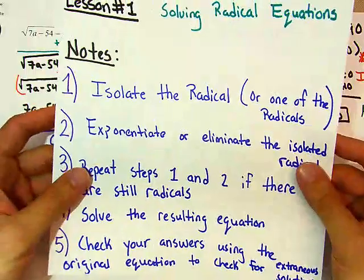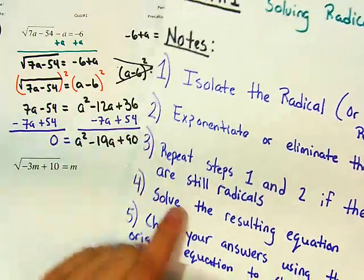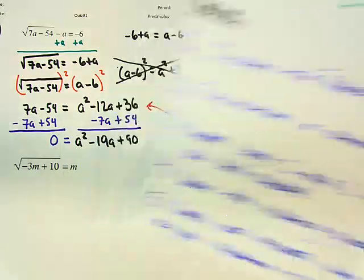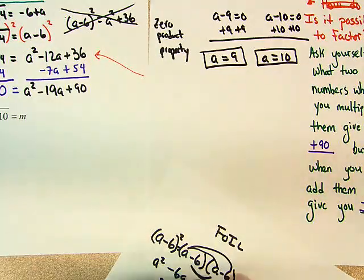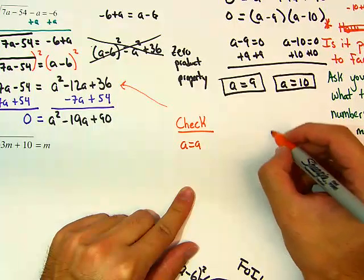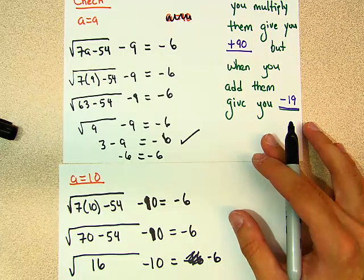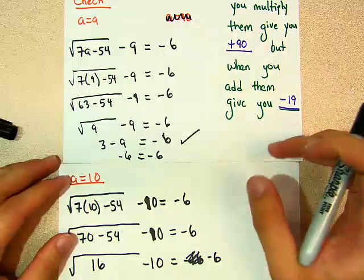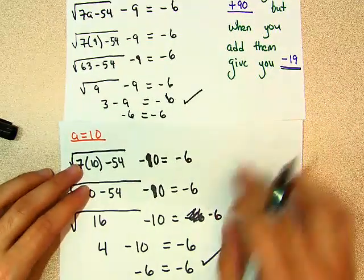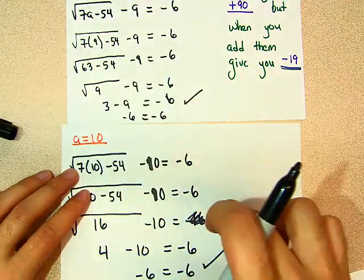Remember, you got to follow these rules: isolate the radical — we did that. Exponentiate — we did that. Repeat steps 1 and 2 — we don't need to do that. Step 4: solve the resulting equation — we solved it. But then what do you have to do? You have to check your answers. We got to check for extraneous solutions. Check that a equals 9 works in this equation, and check if a equals 10 works. Here it is — I did the check for you. The check for a equals 9 works, and the check for a equals 10 works.